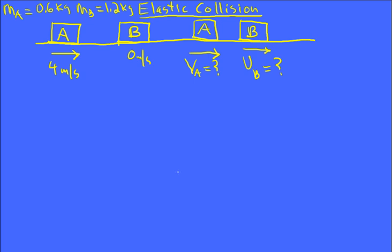Let's take a look at an elastic collision. These can be tough depending on what the unknowns are. Here I have a mass, call it mass A, that's 0.6 kilograms sliding on a frictionless surface at 4 meters per second.